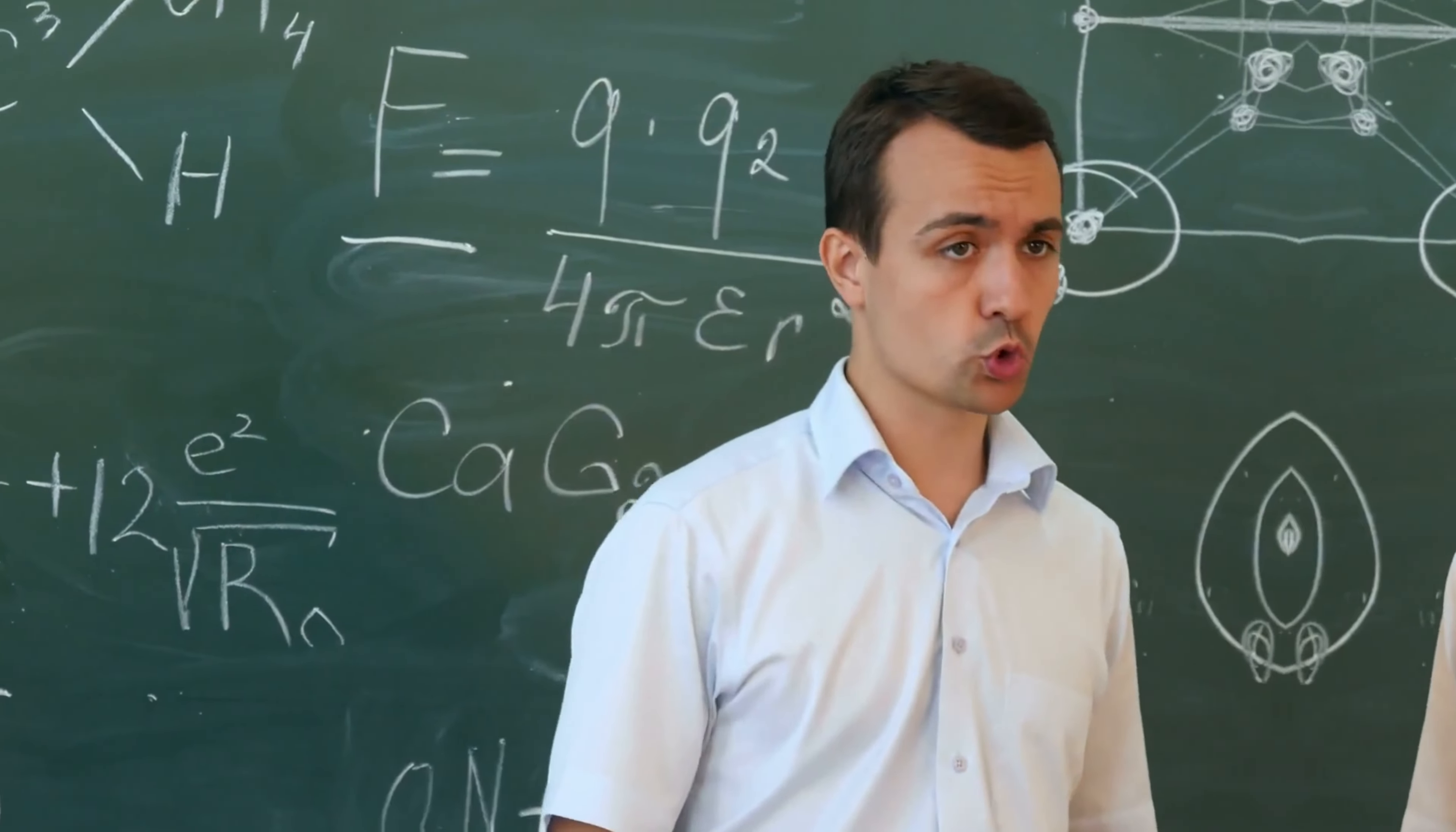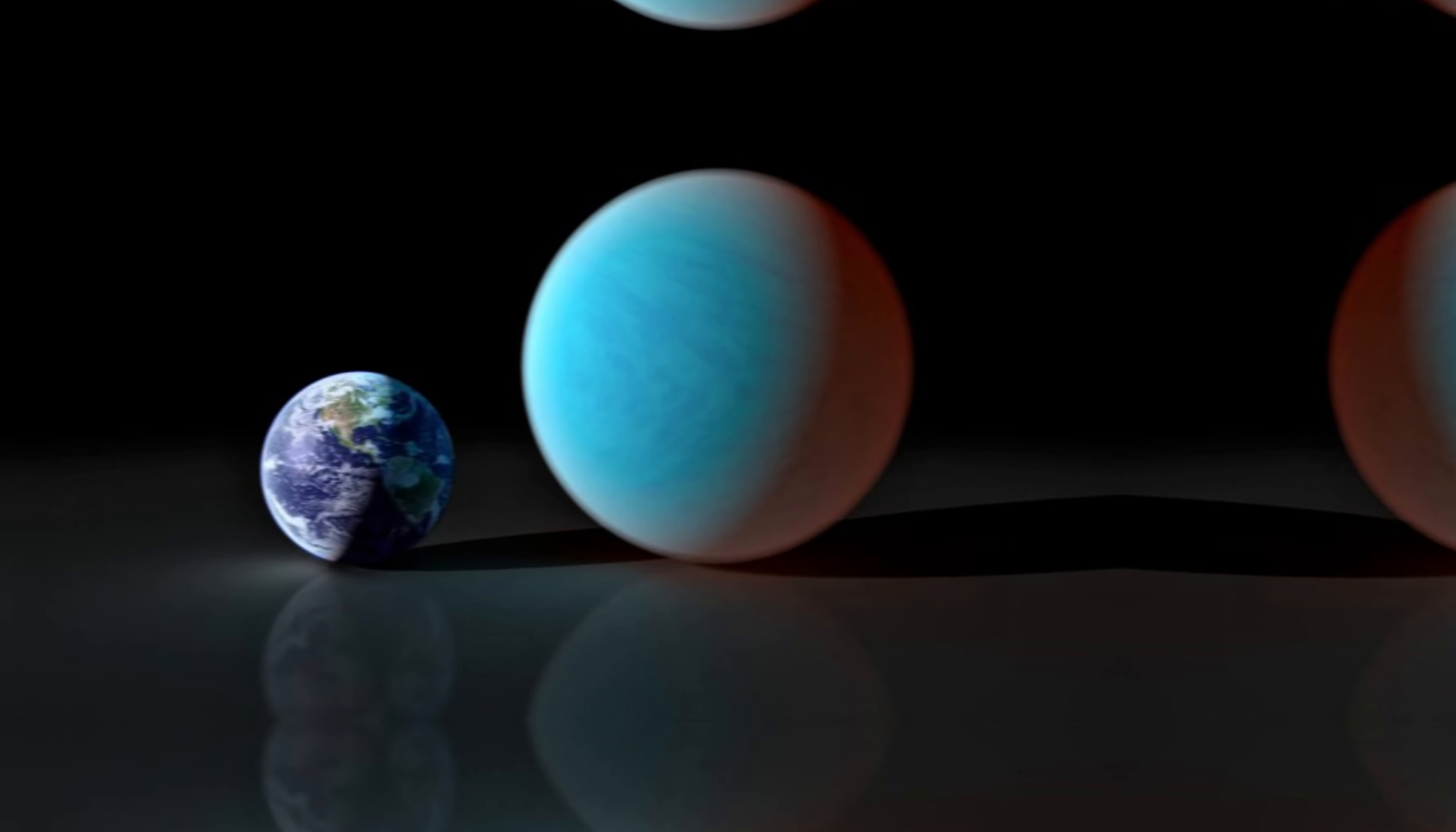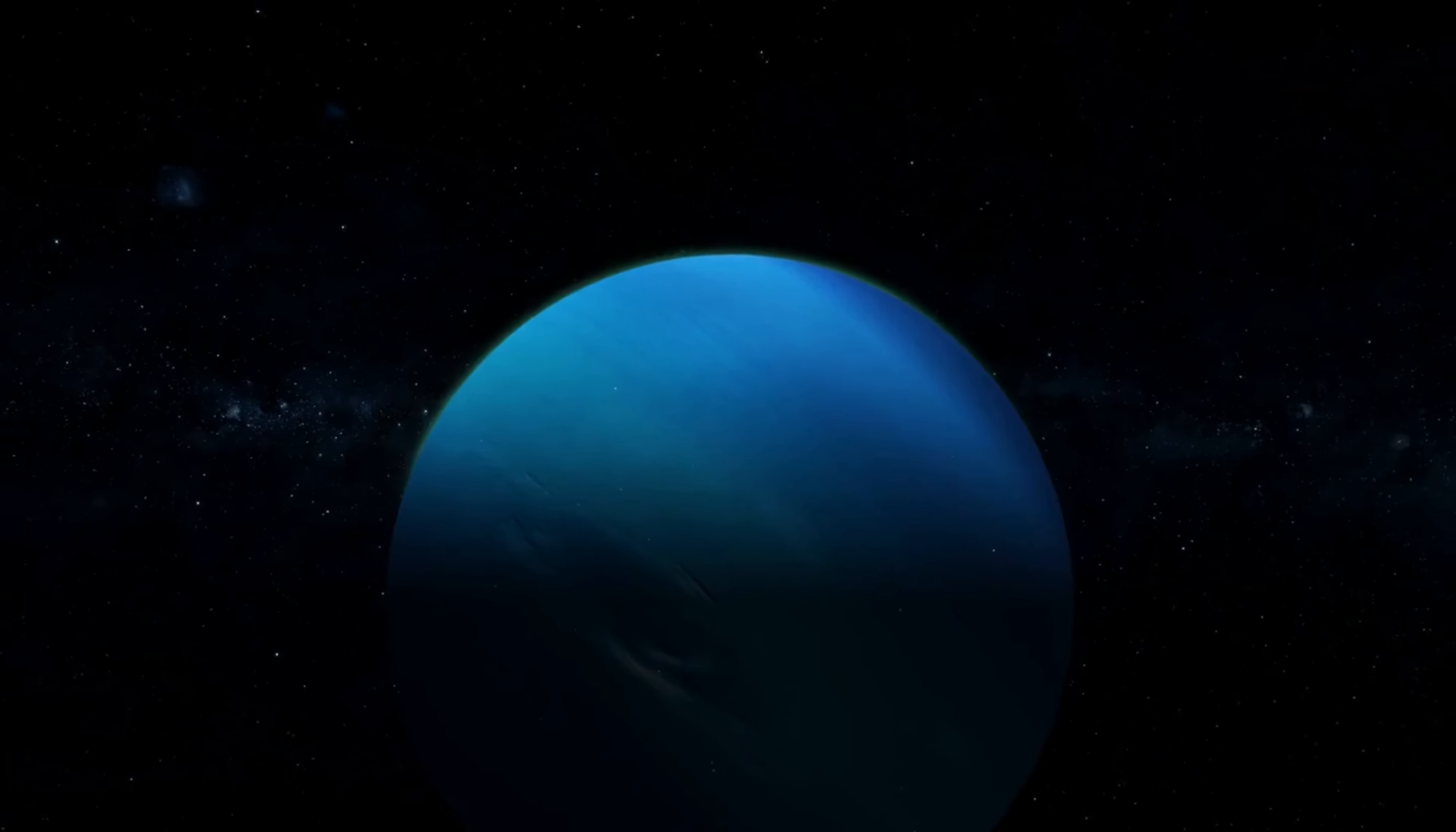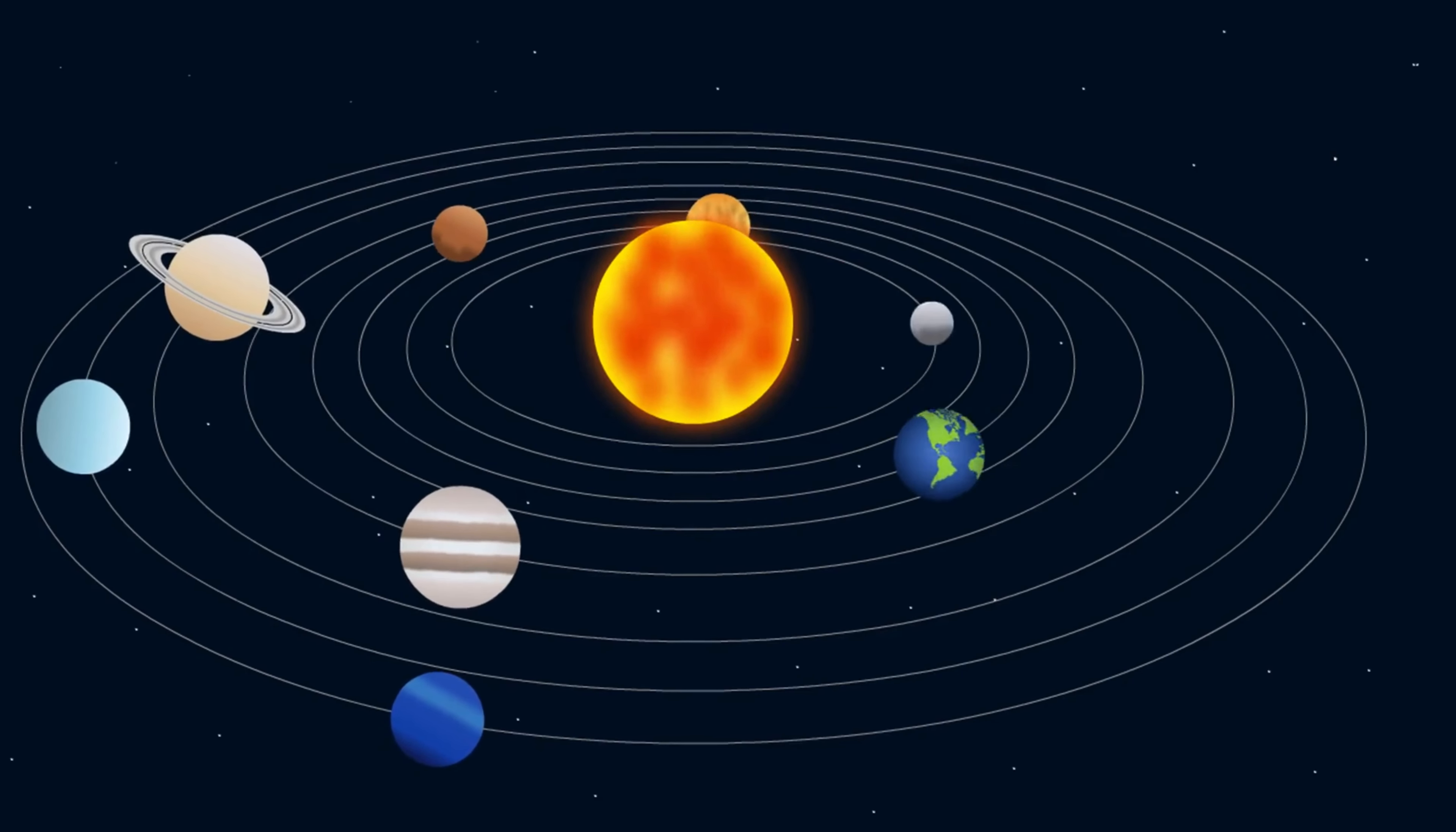This is where the beauty of mathematics comes in. By studying these orbits, researchers have been able to calculate the properties of this mysterious entity. They suggest that this Planet Nine, as they've nicknamed it, could be about 10 times the mass of Earth. It's believed to be orbiting in a highly elongated path about 20 times farther from the sun than Neptune. As a result, it may take between 10,000 and 20,000 Earth years for it to complete just one orbit around the sun.